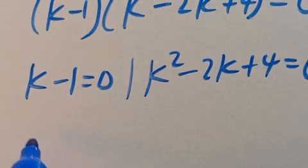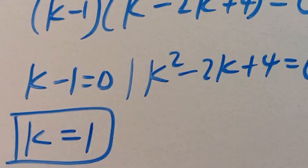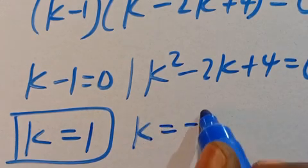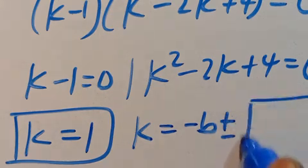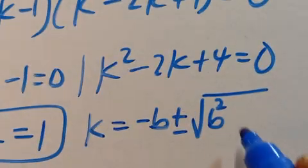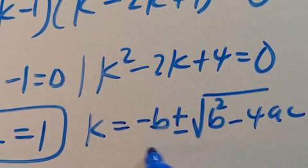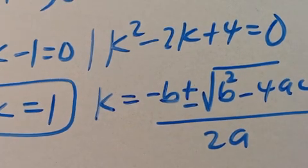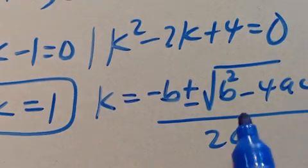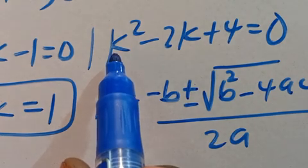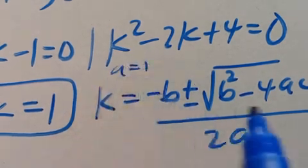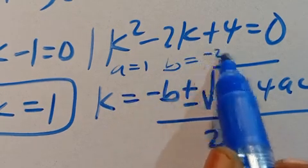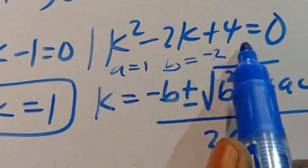From k minus 1 equals zero we get k equals 1. For k squared minus 2k plus 4 equals zero, we apply the quadratic formula. The parameter A is the coefficient of k squared, which is 1. The parameter B is the coefficient of k, which is minus 2. The parameter C is the constant, which is 4.